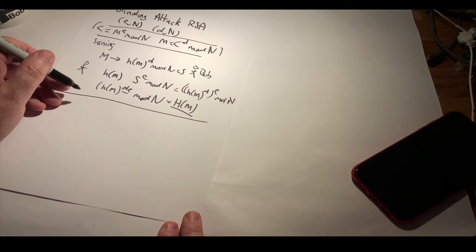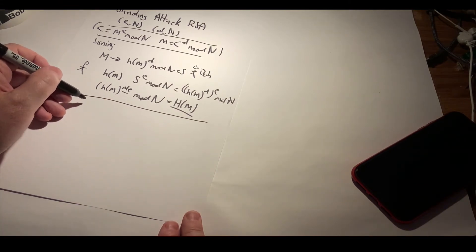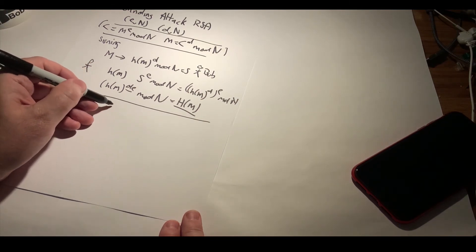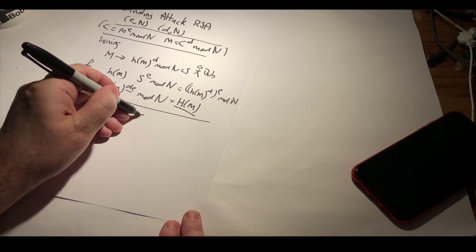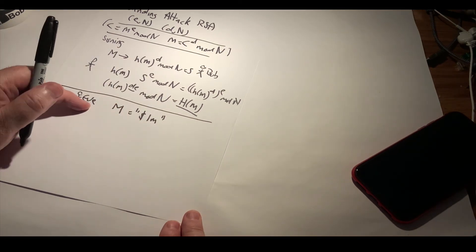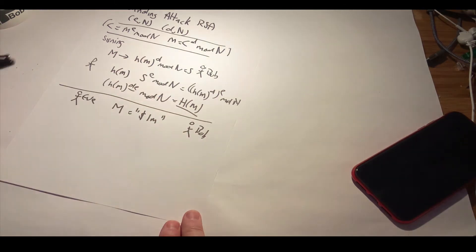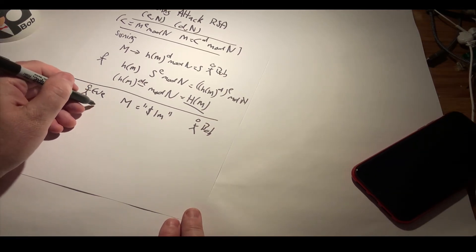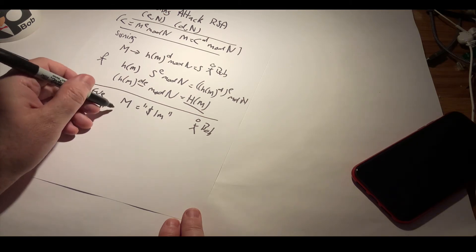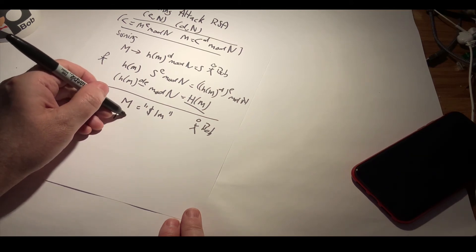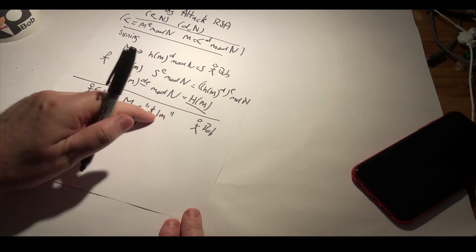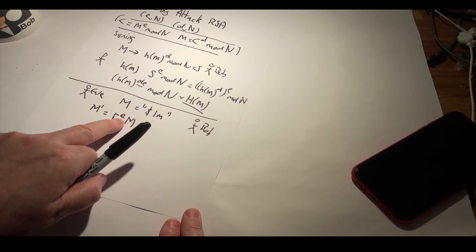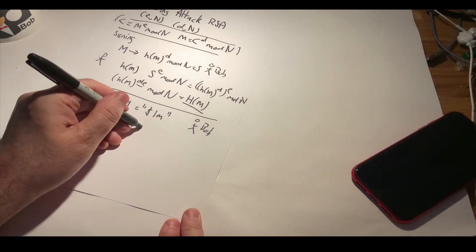Let's look at a trick that Eve might perform on Bob. Eve wants to get Bob to sign a message M — that message might be 'one million dollars.' With the blinding attack, Eve sends Bob a blinded message: a random number R raised to the power of Bob's public key e, multiplied by the message M, mod n.